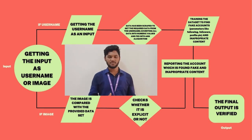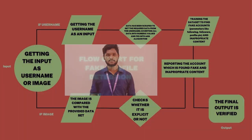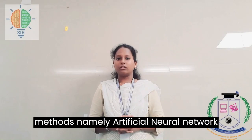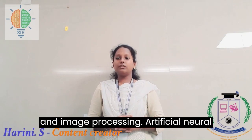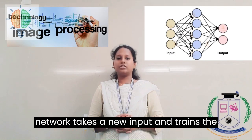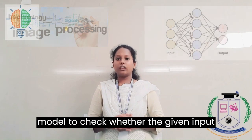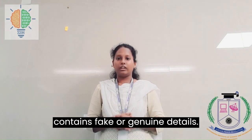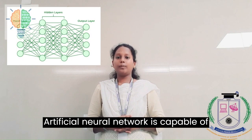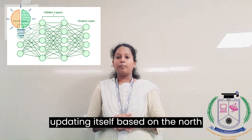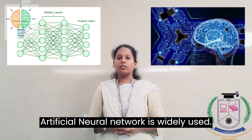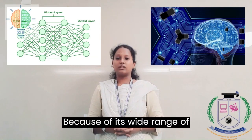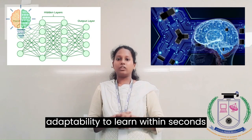If impersonation or explicit content is recognized, then the profile is reported as a fake profile. In our program, we have adapted two methods, namely artificial neural network and image processing. Artificial neural network takes a new input and trains the model to check whether the given input contains fake or genuine details. ANN is capable of updating itself based on any number of inputs fed into it, and is widely used nowadays because of its wide range of adaptability to learn within seconds.